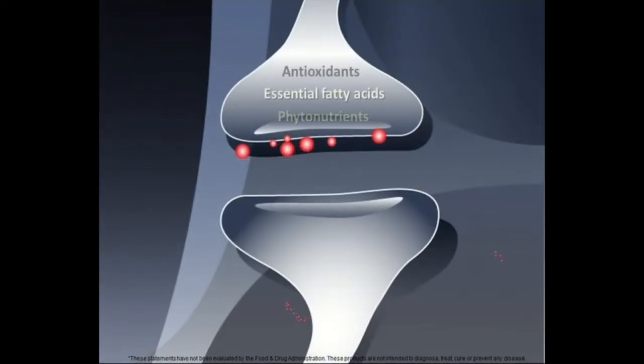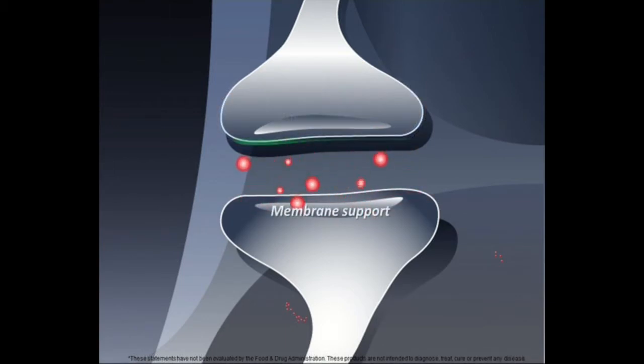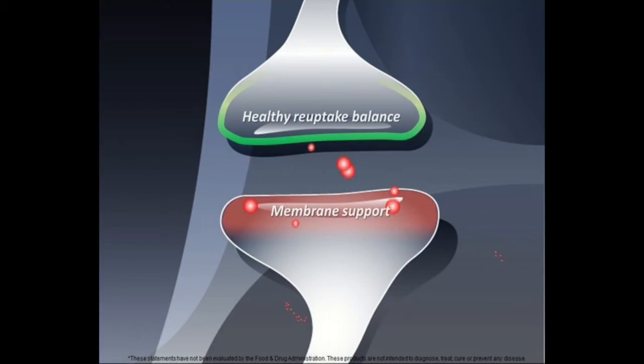Antioxidants, essential fatty acids, and phytonutrients help to sustain neurotransmission by maintaining healthy membranes, reuptake balance, and enzyme activity.